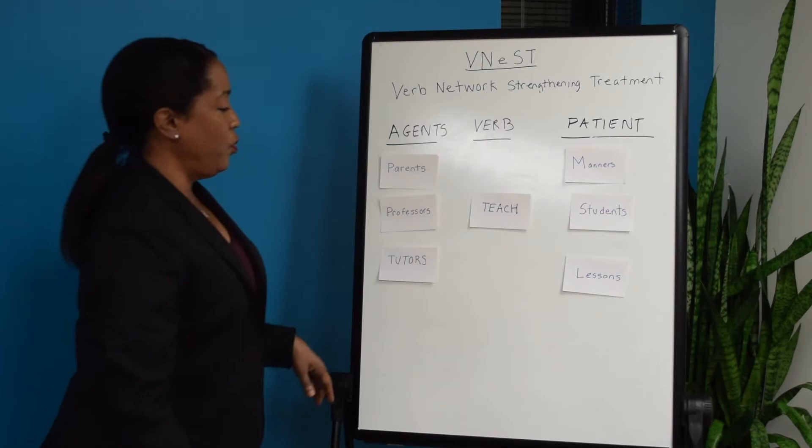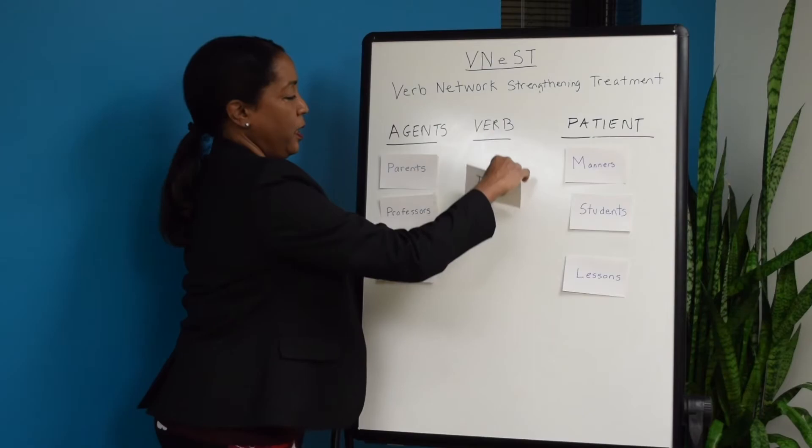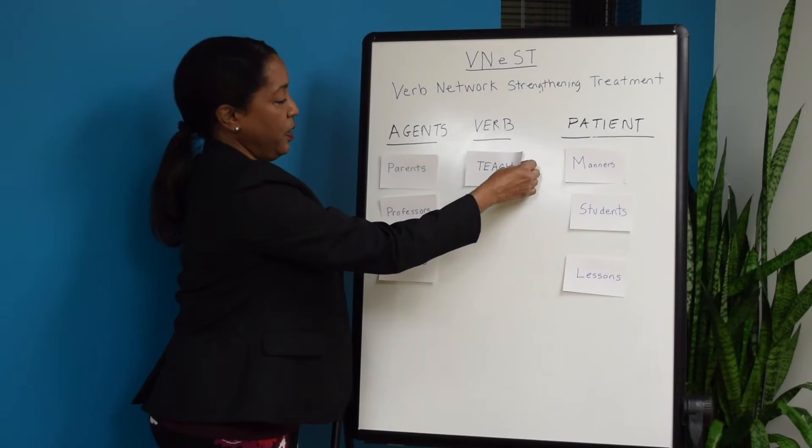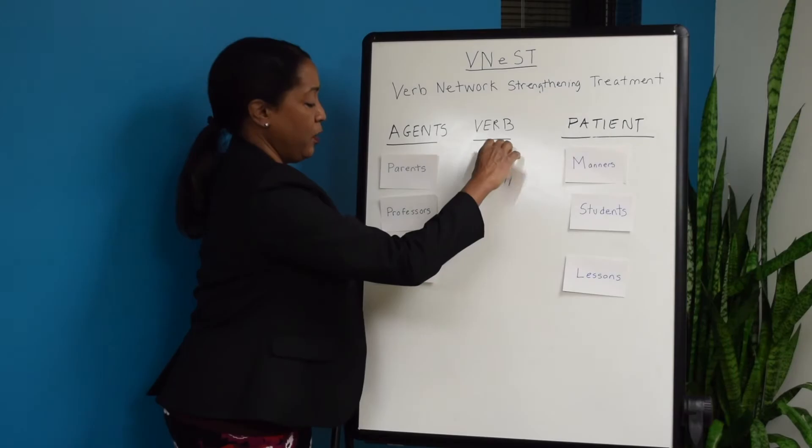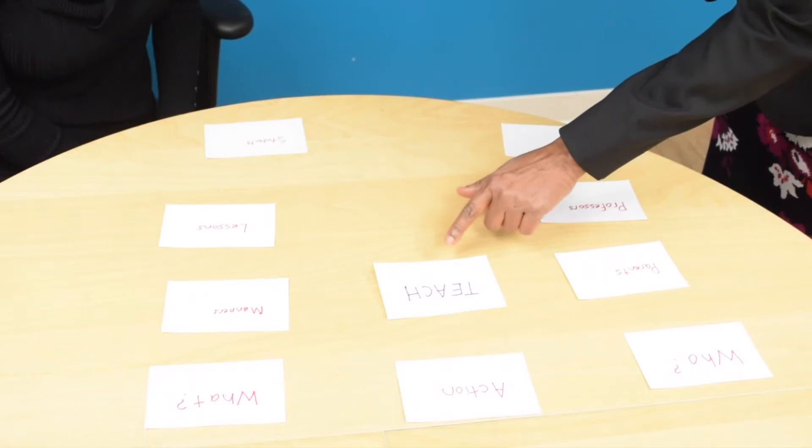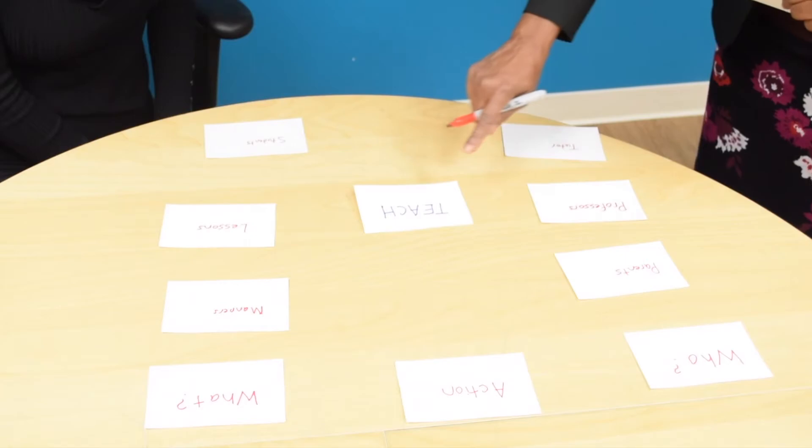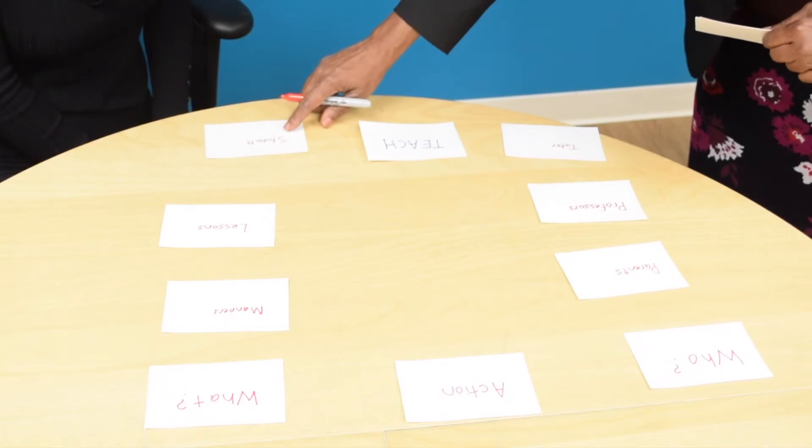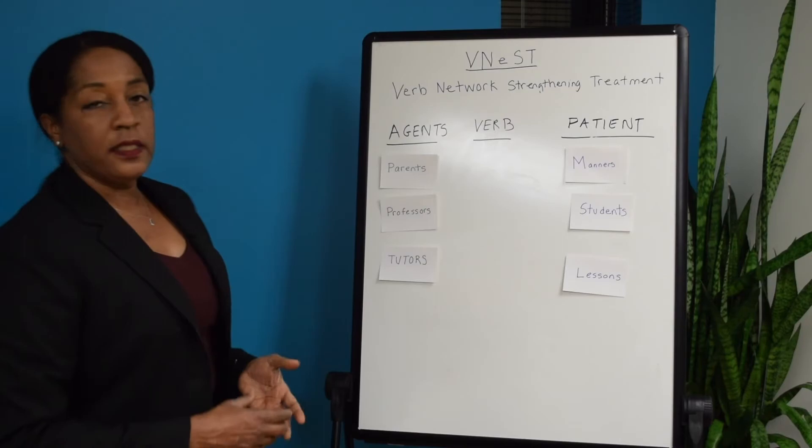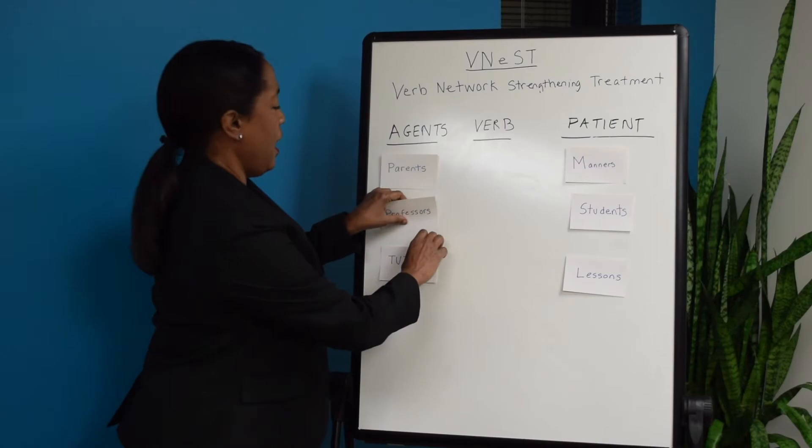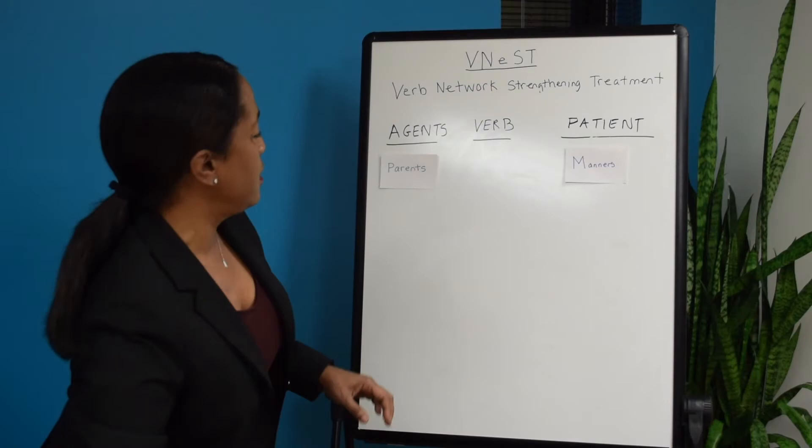After they would identify all of those words, I would have them read the sentences back. I would move the verb so that it aligns with the agent and the patient and they would say: parents teach manners, professors teach lessons, and tutors teach students. I would then ask them which sentence they would like to talk about.